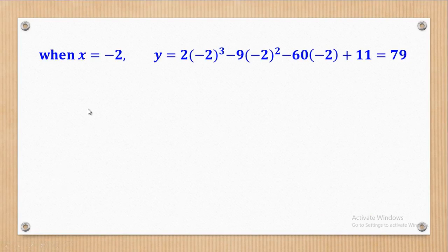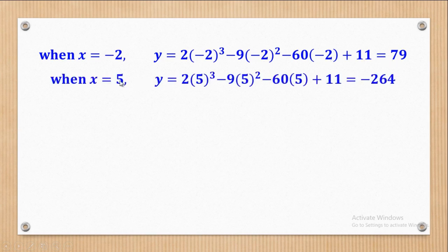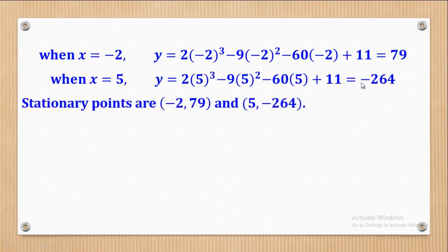Now that I have the x-coordinates of the stationary points, I need the corresponding y values. When x = −2, substituting into the equation gives y = 79, so one coordinate is (−2, 79). When x = 5, the y value is −264. So the stationary points are (−2, 79) and (5, −264).